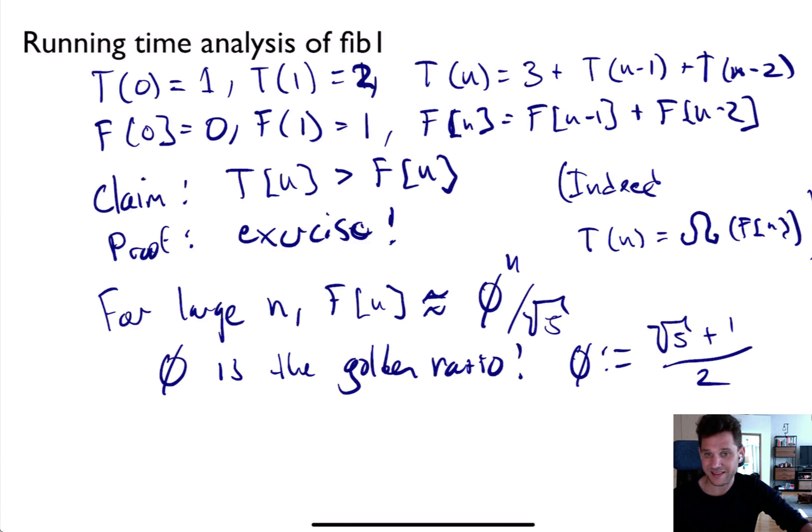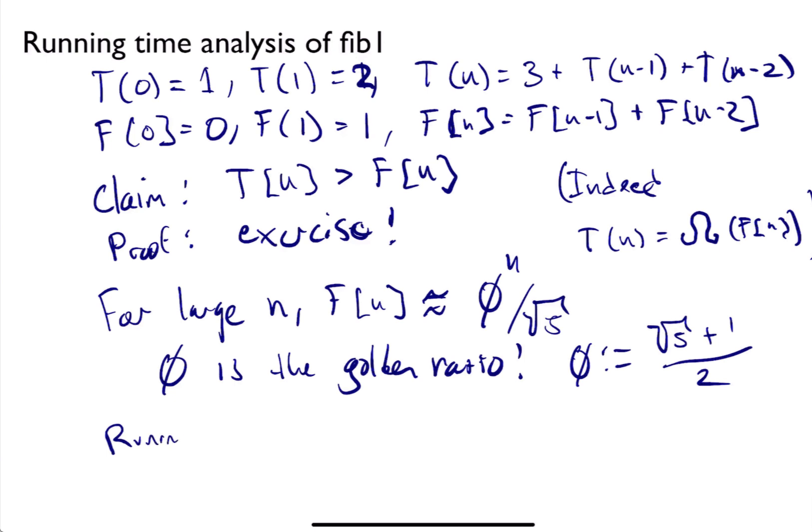We don't have to talk about here why that's the case, but just believe me that F(n) grows exponentially. So if F(n) grows exponentially, that means that T(n) also grows exponentially, because T(n) is growing more quickly than F(n), or at least it's larger than F(n).